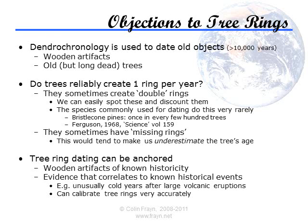Objections to tree ring dating almost always centre around the claim that trees can create multiple rings in any one year, and that they can sometimes create none at all. We can discard the latter for a start because, though it is true, it can easily be corrected for, and it would tend to underestimate the age of a tree anyway, making the creationist's point even weaker. As for multiple annual rings — well, yes and no. Some tree species are susceptible to this, but the ones used in dendrochronology are chosen for their lack of susceptibility.